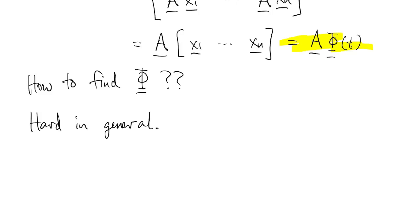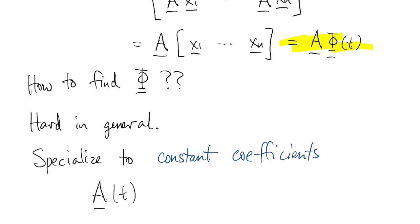So we're going to specialize to the most important case, which is the constant coefficient problem. And all that means is that this coefficient matrix A doesn't really depend on time, it's constant. And then we can do quite a bit.